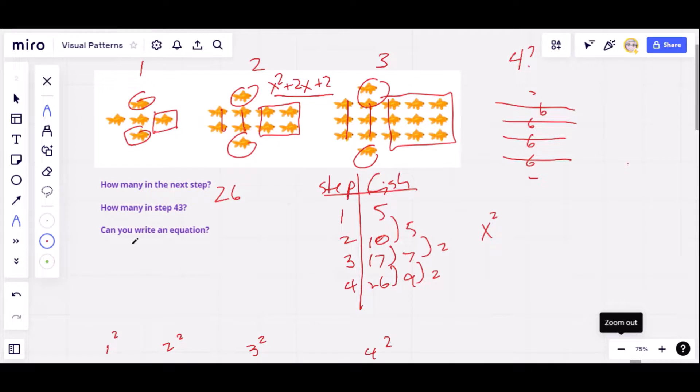So I'm saying the equation is y equals x squared plus 2x plus 2. Let's actually make sure it matches with the numbers. So in step 3, that would be 3 squared plus 2 times 3 plus 2. That would be 9 plus 6. That's 15, 16, 17. And yes, we have 17 in step 3.